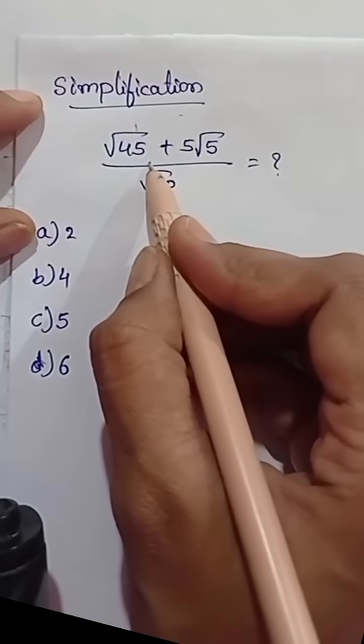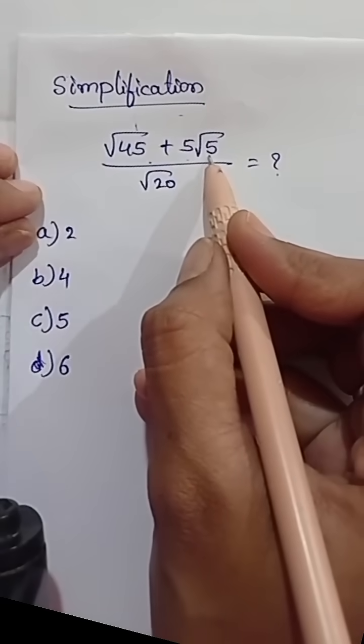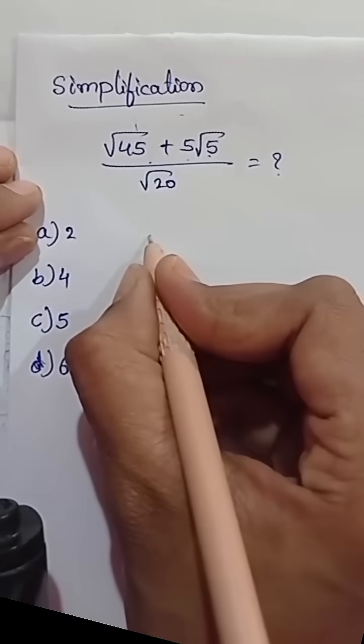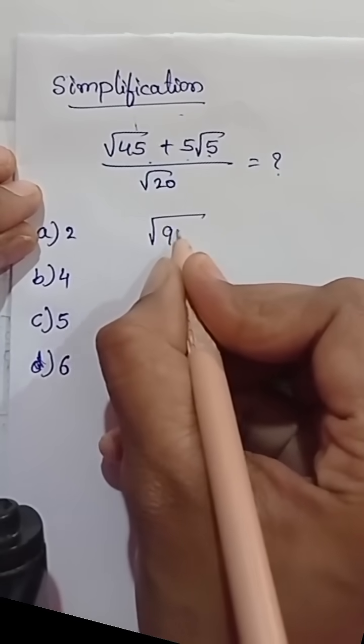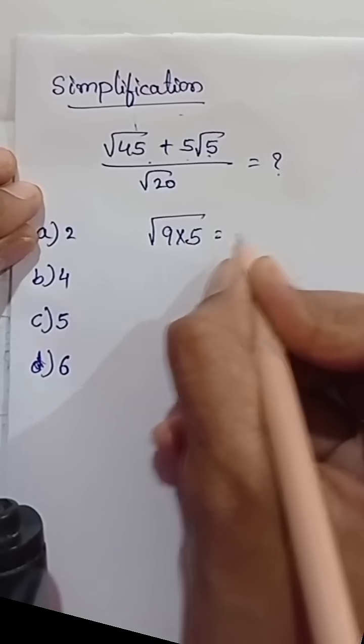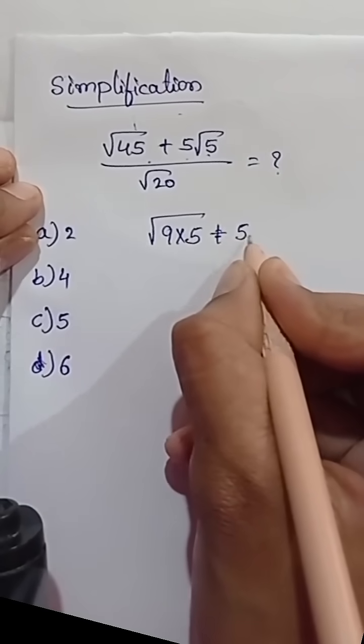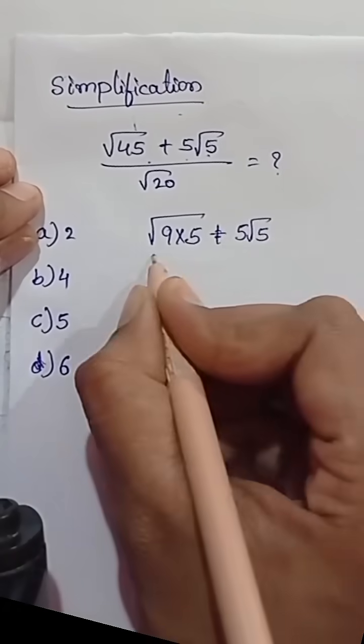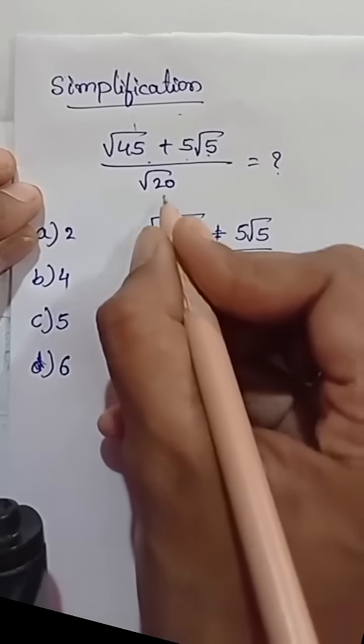We will simplify this rooted equation: square root of 45 plus 5 square root of 5 in the denominator we have square root of 20, and we have options also. This square root of 45 we can write it as 9 into 5, that is 45, plus 5 square root of 5 as it is, and in the denominator square root of 20 we can write it as 4 into 5.